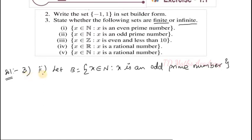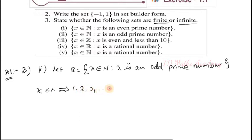Now the second Roman numeral question: x element of natural number such that x is an odd prime number. Previously it was even prime; here it is odd prime. First condition: x element of natural number. This implies x may be 1, 2, 3, dot dot dot. And x is odd prime — so x element of natural number and x is odd prime.